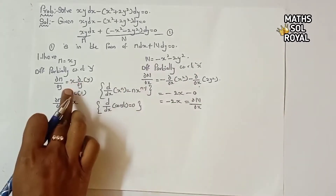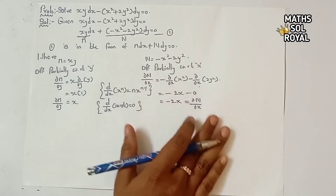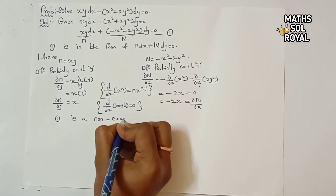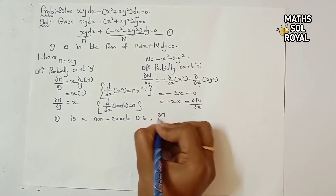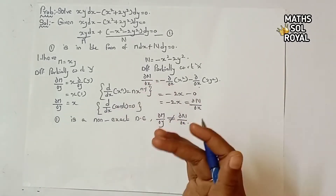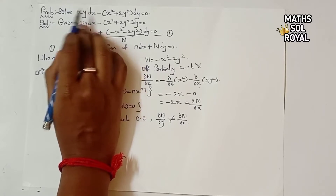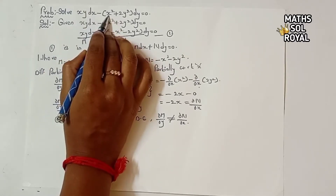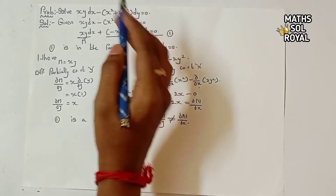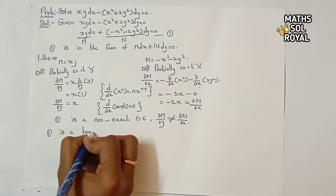Since ∂M/∂y and ∂N/∂x are not the same (x ≠ -2x), this is a non-exact differential equation. Now checking each term's degree: x·y has degree 2, x² and 2y² each have degree 2. Since every term has the same degree (2), equation one is a homogeneous equation.